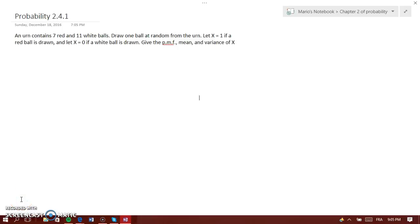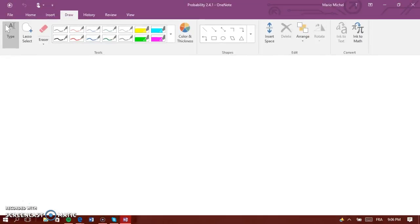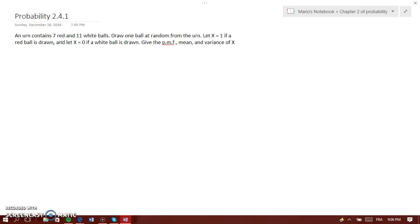All right everyone, here is the problem: An urn contains 7 red and 11 white balls. Draw one ball at random from the urn. Let x equal 1 if a red ball is drawn and let x equal 0 if a white ball is drawn. Give the PMF, mean, and variance of x.